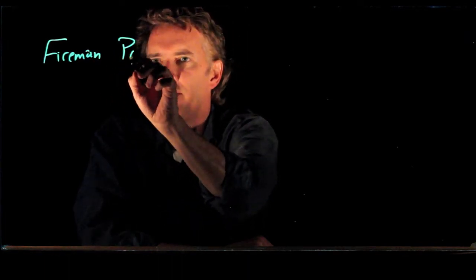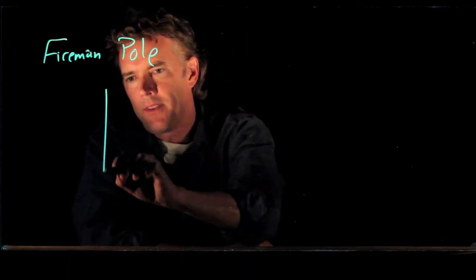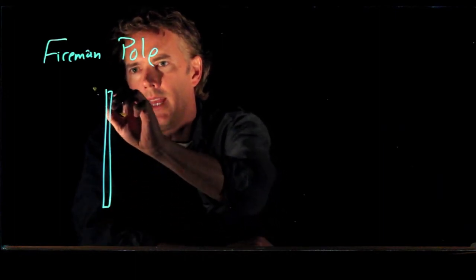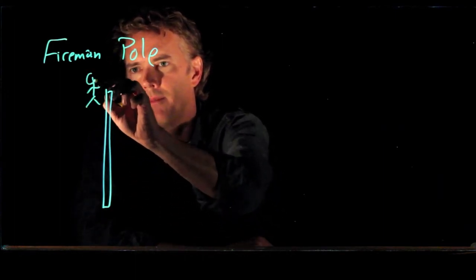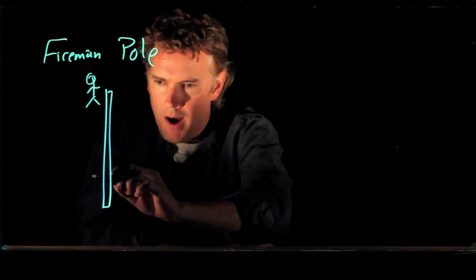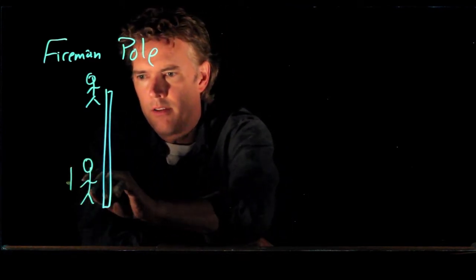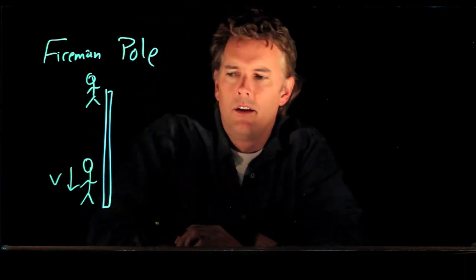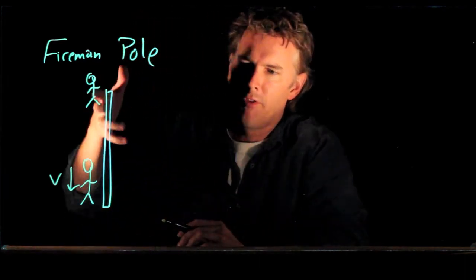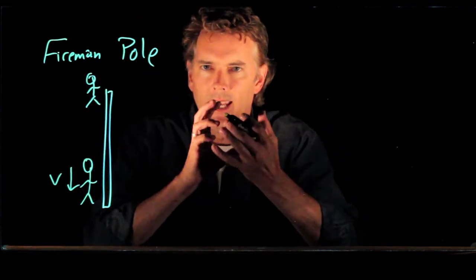So the fireman, when he's at the top of this pole, he has potential energy. And when he gets to the bottom of the pole, he has speed V, but there is also some friction that happened along the way and it heats up his hands.